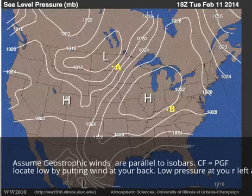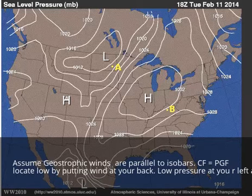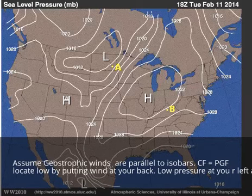The first thing we have to do is pretend that we're dealing with geostrophic winds. With the geostrophic wind, we know that the pressure gradient force is exactly balanced by the Coriolis force. In practical terms, the important thing about geostrophic winds is that they blow parallel to local isobars.